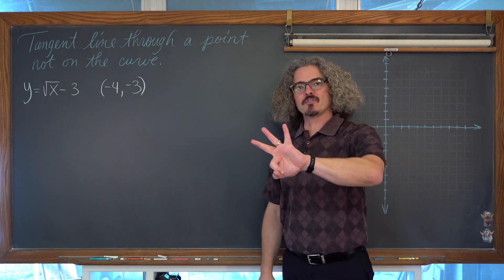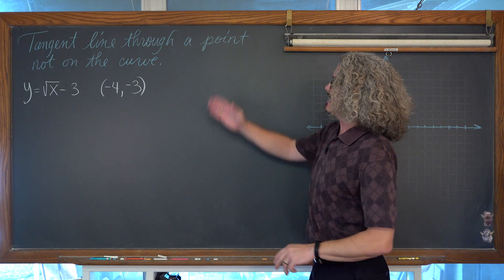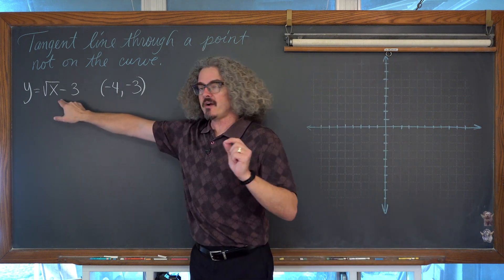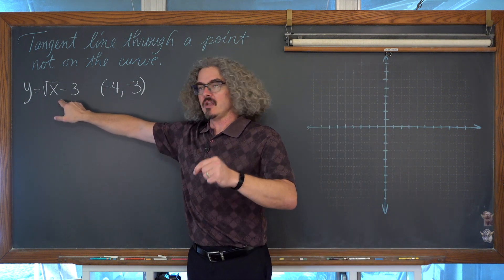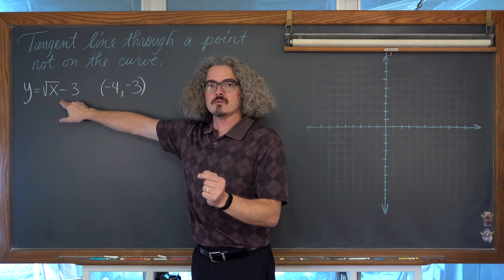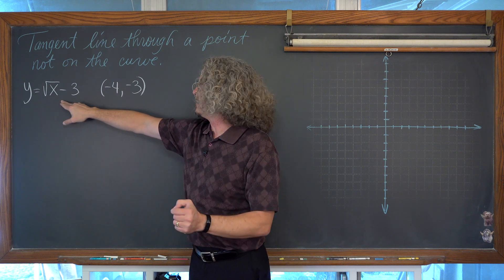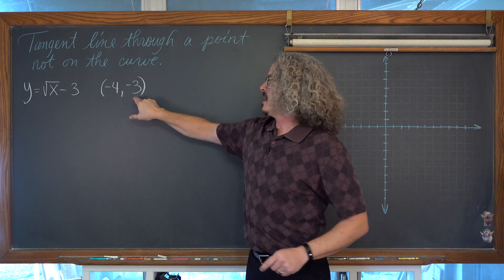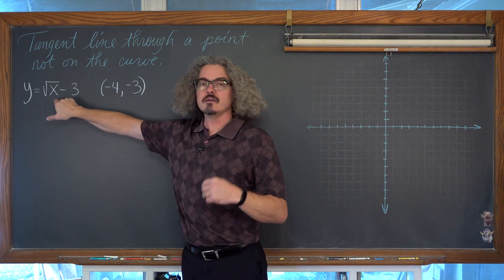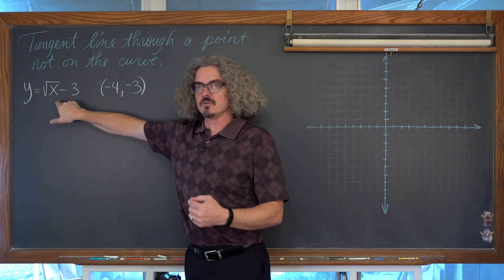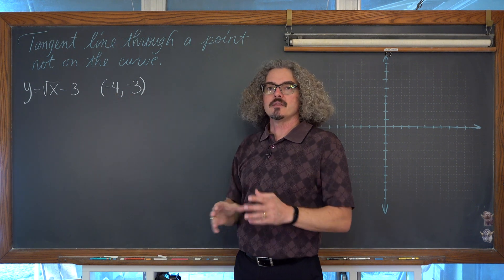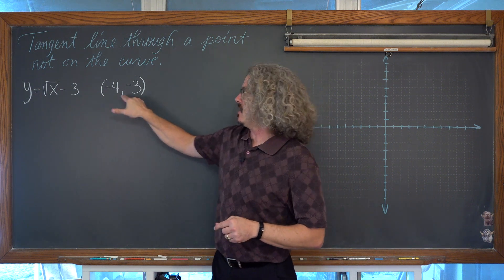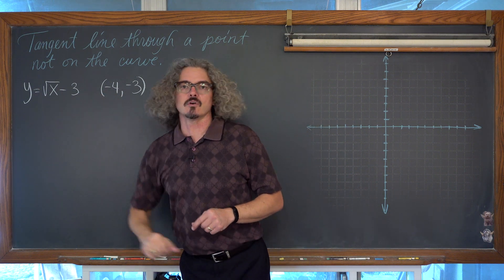In this video we are going to do part three, where we look at finding the equation of a tangent line. We are going to find the equation of a line tangent to the curve y equals the square root of x minus three, but we are not given a point that is actually on this square root function. We are given a point that the tangent line must pass through, but it is not on our given curve.